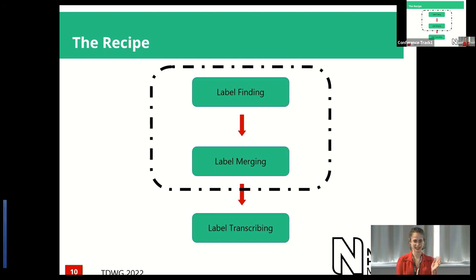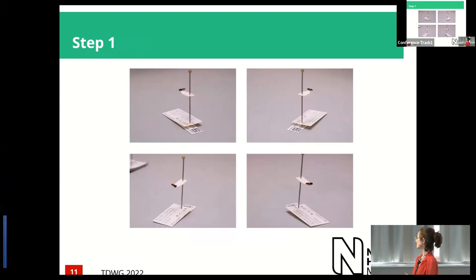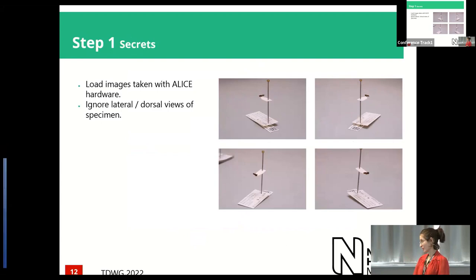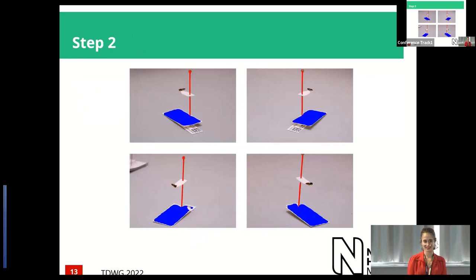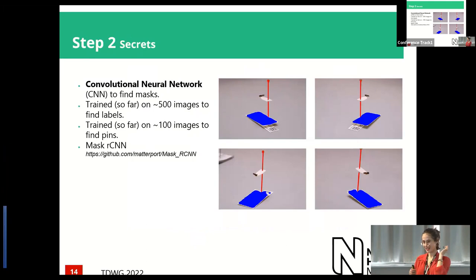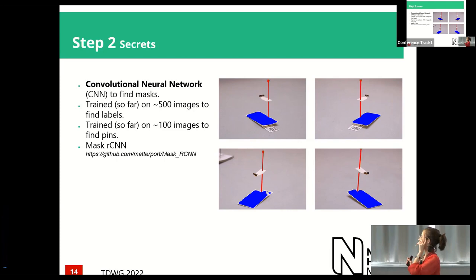Step one: ALIS takes four photos — we ignore the lateral view of the specimen. Step two is where machine learning comes in. We want to use a convolutional neural network. The way it works is it finds bounding boxes: it looks at your image, splits it into grids, determines which grids might contain a label, and uses that information to create regions of interest. We trained it on around 500 images — not that much for CNN classification — to find the labels, and also on pins.